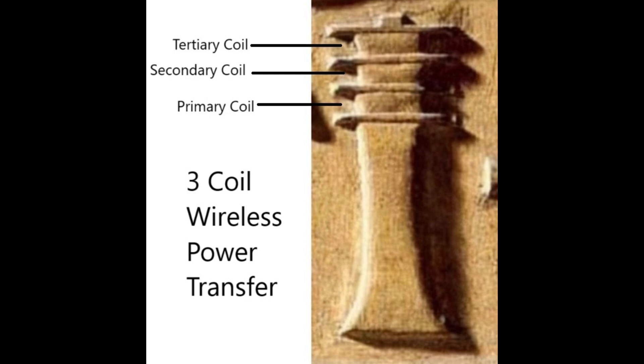And this process can be achieved with a single coil, but a three-coil system improves several key characteristics compared to a single or two-coil system. Here are the main characteristics that are enhanced: efficiency and resonant coupling. The secondary coil enables resonant coupling between the primary and tertiary coils, which significantly increases the efficiency of power transfer.